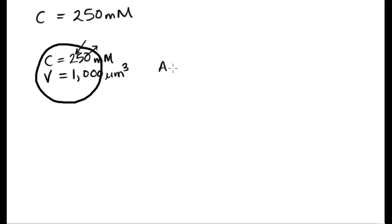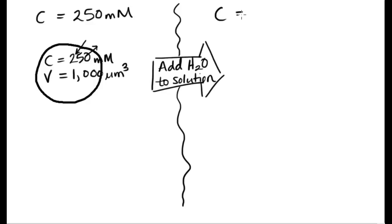Then let's say we change the concentration, maybe by adding water to the surrounding solution. So what's going to happen in this case? If I add water to the solution, is my concentration going to go up or is it going to go down? I'm adding water to the solution, so I'm diluting it, so I'm making that concentration go down. Let's say we went down to 200 millimolar. What's going to happen to our cell?